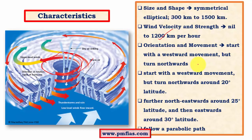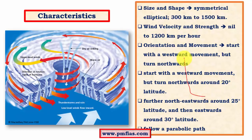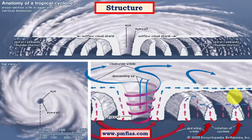Coming to orientation and movement, cyclonic storms usually start moving westwards, then turn northwards, and then turn eastwards, following a parabolic path. This typically starts westward around 20 degrees latitude, turns north at 20 degrees, and turns east between 25–30 degrees latitude. In the Bay of Bengal, cyclones don't follow a westward movement — instead they show only eastward and northward movements. Typhoons and hurricanes follow the full parabolic path.